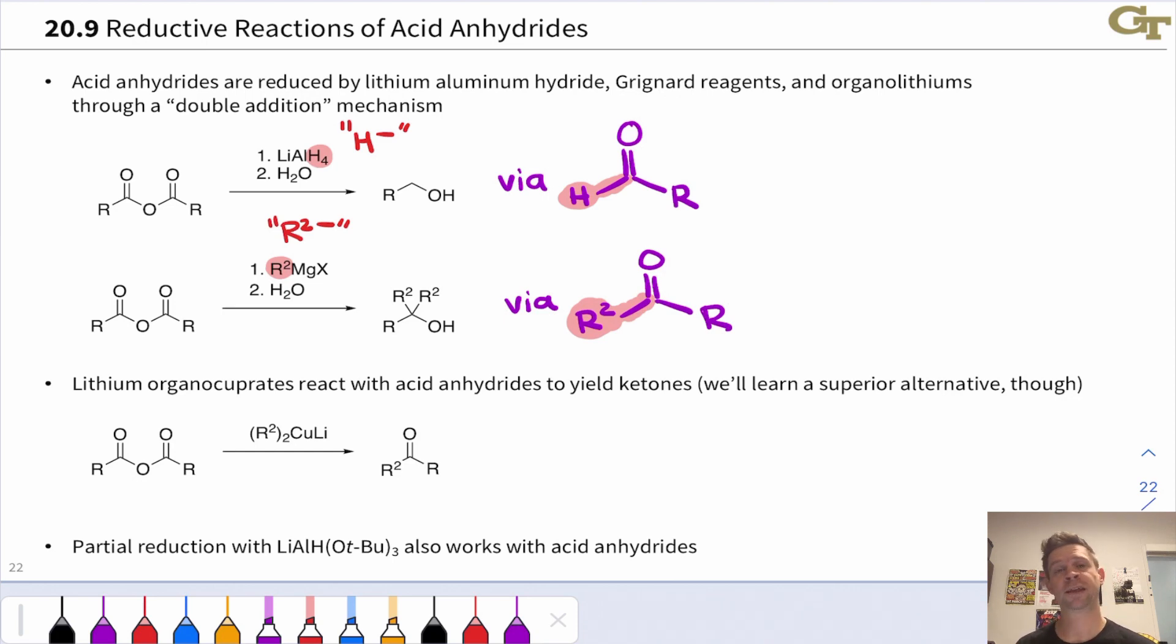Like acyl chlorides, they react with lithium organocuprates to give ketones. These milder organometallic reagents don't add two equivalents of R2-, but only one equivalent. We stop at the ketone stage after substitution of R2- for the carboxylate group.